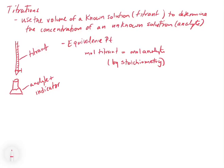The equivalence point is really important - this is usually where the indicator changes color. The equivalence point is slightly different from what we call the endpoint. Technically, when the indicator changes color that's the endpoint, and that may be very close to but not precisely at the equivalence point, because it may take a little bit of excess of one reagent to get the indicator to change color. For now in chapter 4, we'll treat the indicator color change as occurring at the equivalence point.